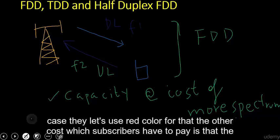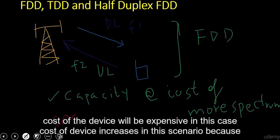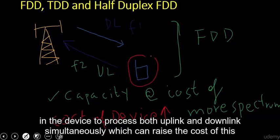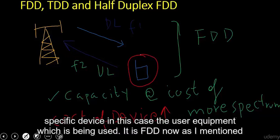Another cost which subscribers or end-user equipment will have to pay is that the cost of the device will be more expensive. This is because the device needs to have a duplexer or duplexer filter installed to process both uplink and downlink simultaneously, which raises the cost of the user equipment.